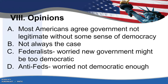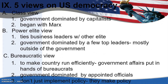Most Americans will agree that the government is not legitimate without some sense of democracy, and yet that's not always been the case. If we look back to the Federalists and Anti-Federalists, the Federalists were worried about the new government being too democratic and the Anti-Federalists were worried it wasn't democratic enough. We're going to look at five views on U.S. democracy. The class view is the idea that the government is dominated by capitalists — it starts with Marx. When we look at the power elite, we are looking at business leaders and other elites, where the government is basically dominated by a few top leaders who are mostly outside of government but exert their influence.